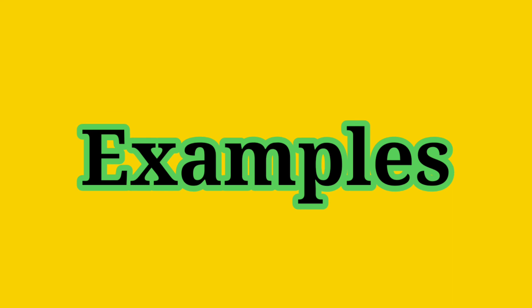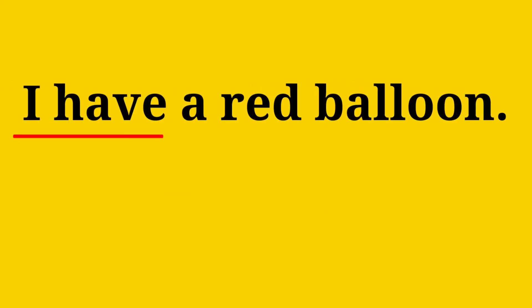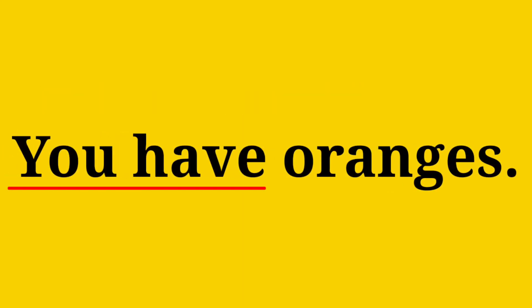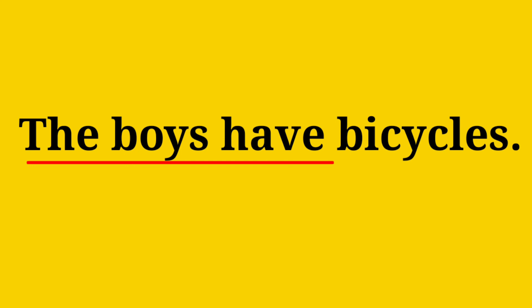Examples are: I have a red balloon. They have toys. We have beautiful flowers. You have oranges. The boys have bicycles.